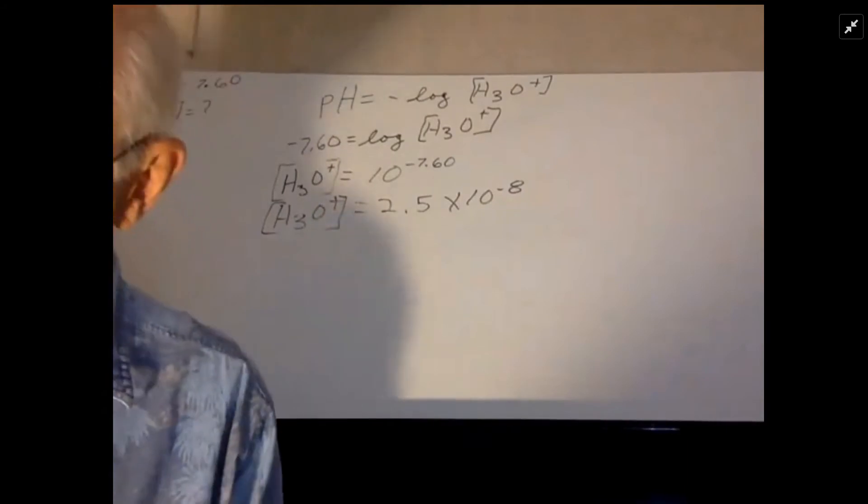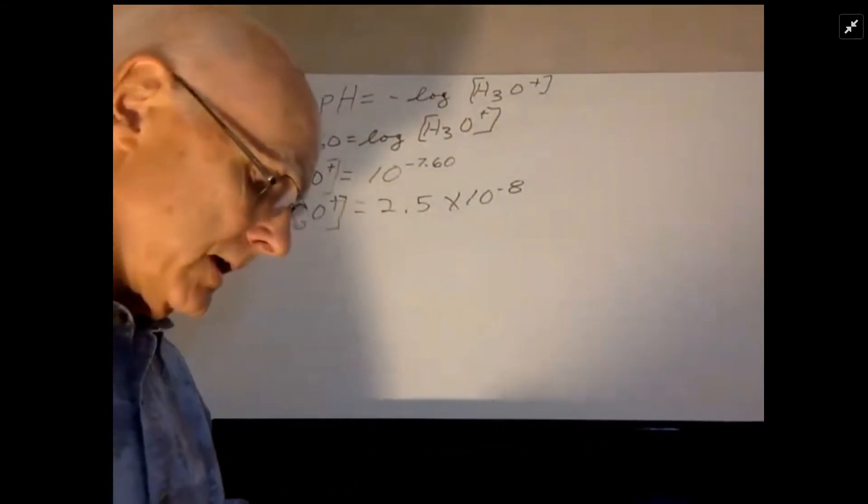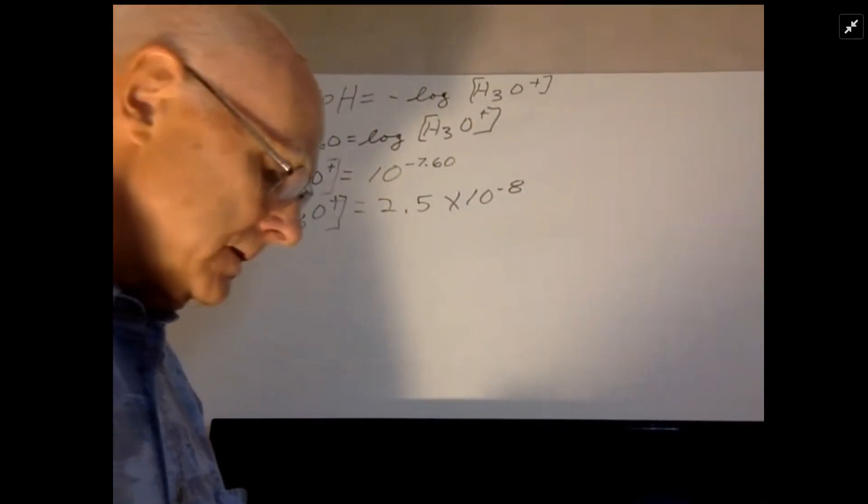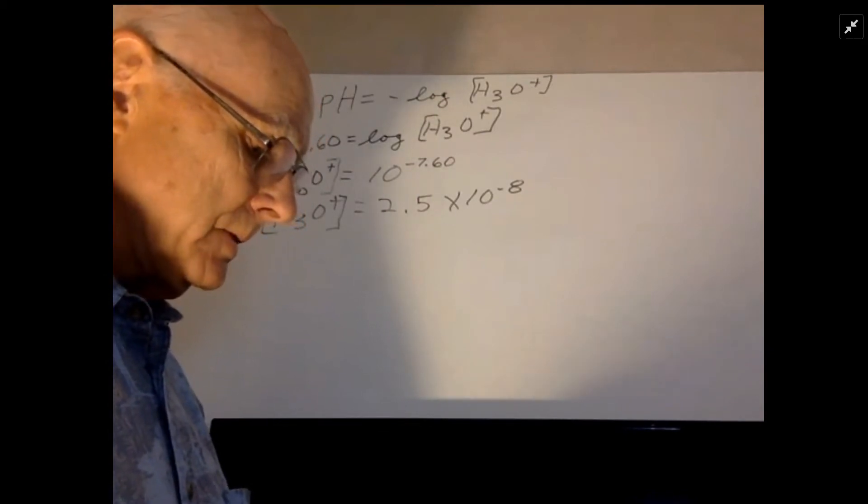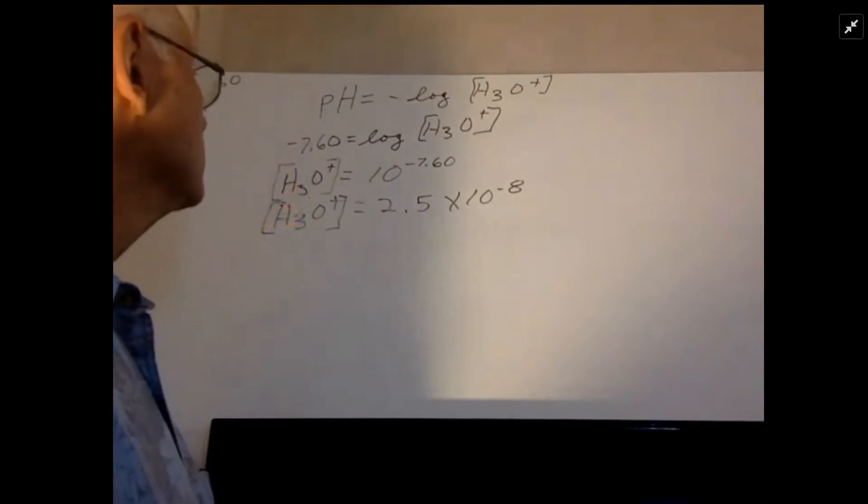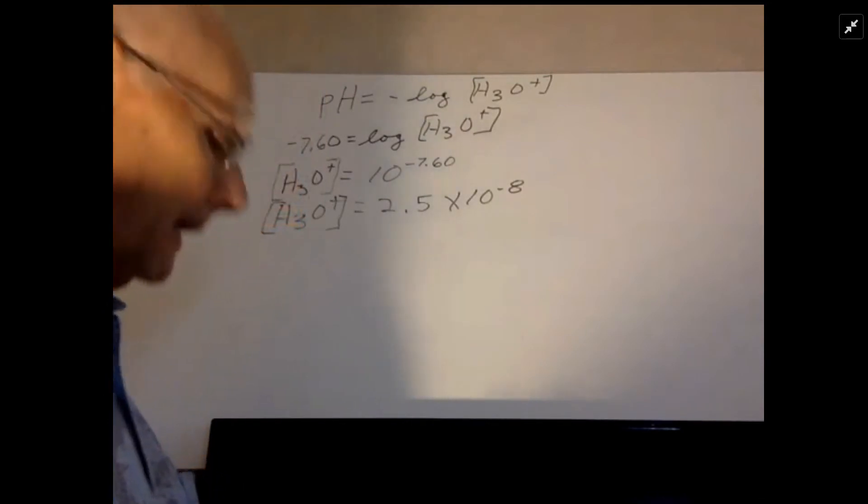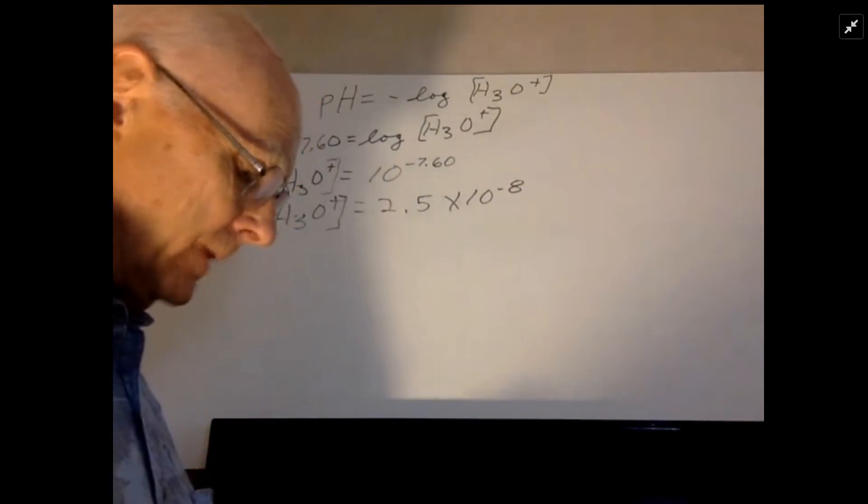On my calculator it's TI, and I would hit second function and 10 to the x. This is really what we call the anti-log, so we want the anti-log of negative 7.6.